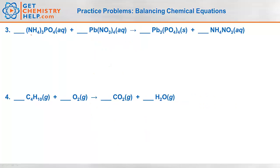Number three: ammonium phosphate reacts with lead-4-nitrate to produce lead-4-phosphate and ammonium nitrate. Here again there are several polyatomics on both sides: ammonium on both sides, phosphate on both sides, and nitrate on both sides as well. Working left to right: three ammoniums on the reactants, only one on the product side, so I'll make this a three.